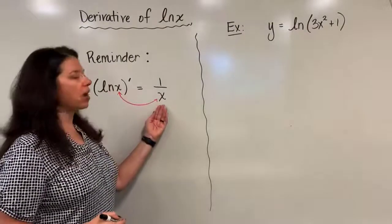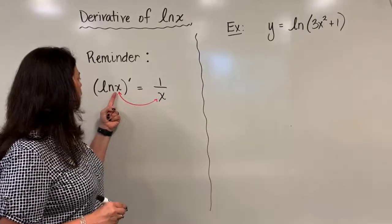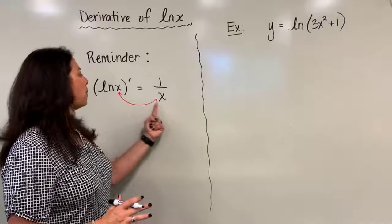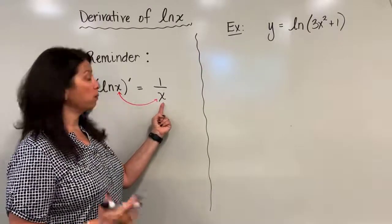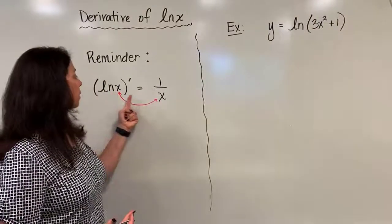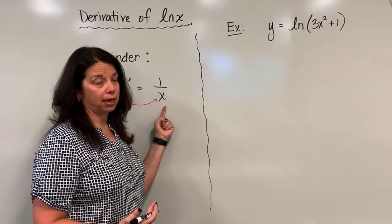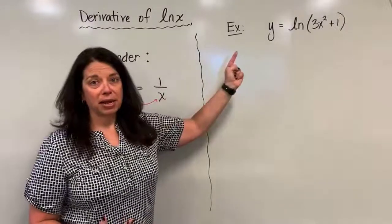Just a reminder, like we saw in the last couple of videos, the derivative of natural log x is in fact 1 over x. Another reminder: when I have an argument of just x here, my denominator for my derivative result is also just an x. But if this argument is more complicated, then this denominator also needs to match and be more complicated.